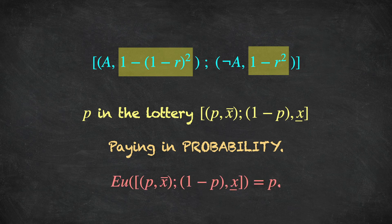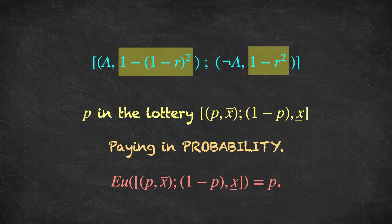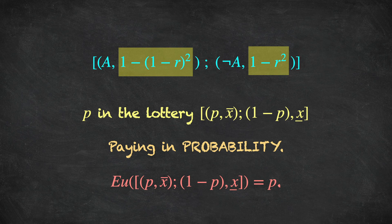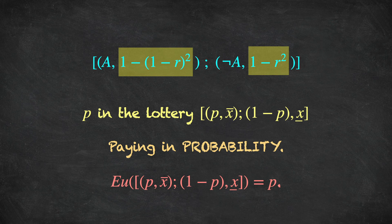They are going to get a lottery that depends on the state of the world. And in one state, the probability attached to the best outcome is 1 minus (1 minus R) squared. And if the event A does not happen, then the probability attached to the best outcome is 1 minus R squared. Now, expected utility under the usual normalization where we set the utility of the best outcome equal to 1 and the utility of the worst outcome equal to 0, the expected utility of this lottery is simply equal to P. And so, we have found a currency for which our decision maker has linear utility. By paying subjects in probability currency, their utility must be linear if they are expected utility maximizers. In this way, we can induce linear utility by paying in probability points.